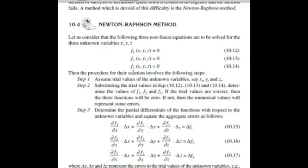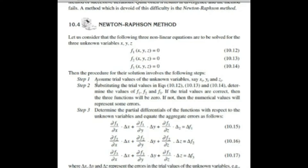Newton-Raphson method is basically used to solve non-linear equations. You can see here these are three equations having the unknown variables x, y, and z. The first step is to assume trial values of the unknown variables x, y, and z. Initially we are supposed to solve this equation using the simultaneous equation method and put these trial values first.